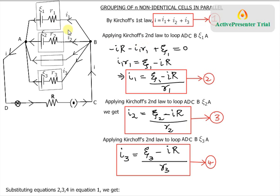Then you go through the cell of EMF E1, moving from the negative to the positive terminal. The negative terminal is at lower potential and the positive terminal is at higher potential, so there is an increase in potential. The difference between the two terminals is E1, so you write plus E1. Coming back to the starting point with no more resistance, the total change in potential around the closed loop equals zero by Kirchhoff's second law. Rearranging gives I1 × r1 = E1 − IR, so I1 = (E1 − IR) / r1.